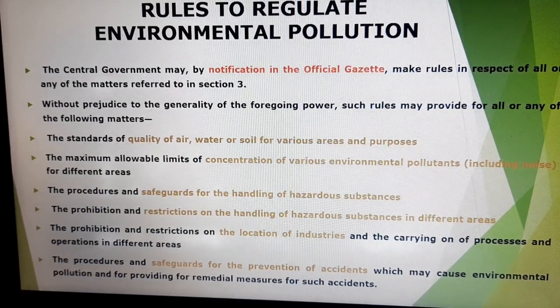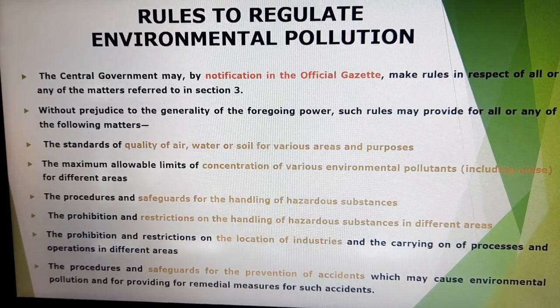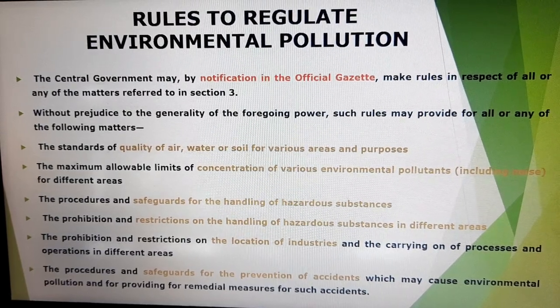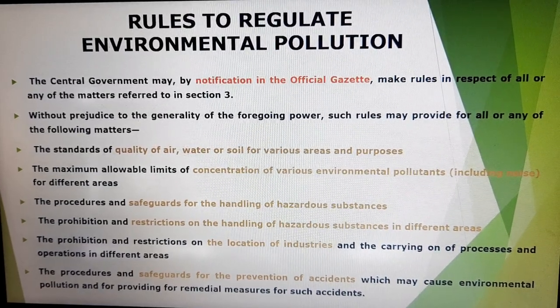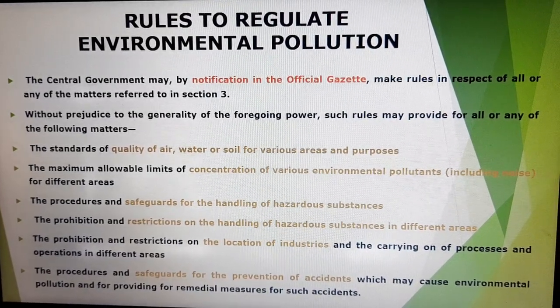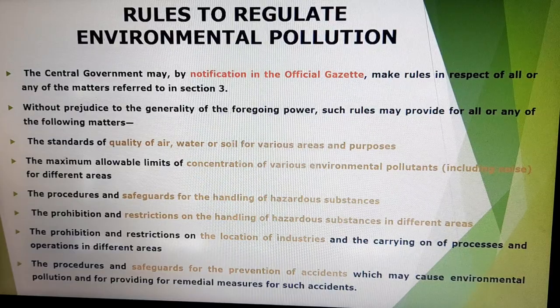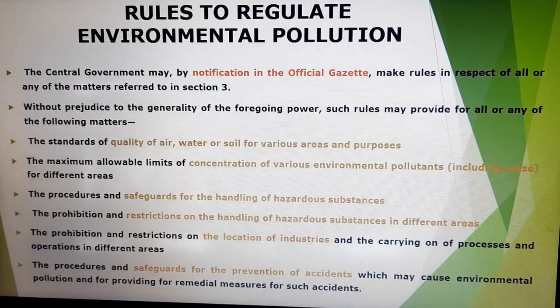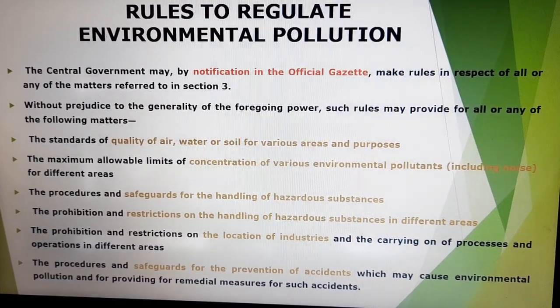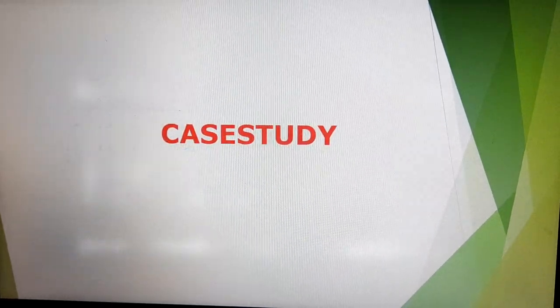Next, there is prohibition and restriction on the location of industries and carrying on any process and operations in different areas. Usually industries are set up in industrial areas, not in residential areas. This act provides rules and directions for setting up industries, location of industries, and for carrying out their operations and activities. Next is the procedure and safeguard for prevention of accidents which may cause environmental pollution and for providing remedial measures for such accidents.